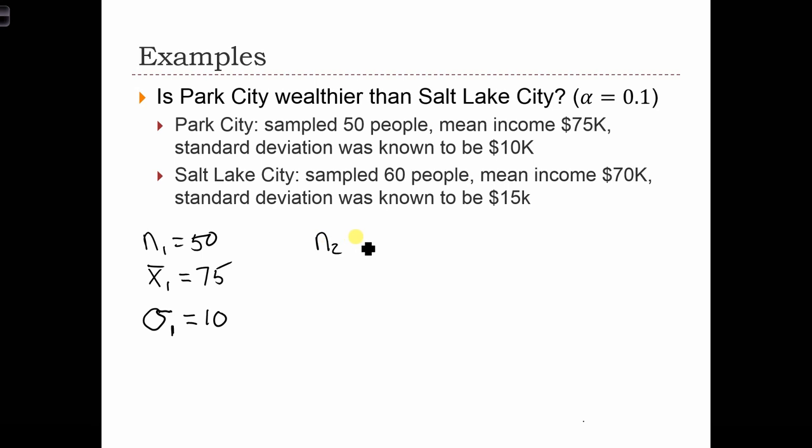In sample number two, they collected 60 people. There was a mean income there of $70,000 and a known population standard deviation of $15,000. I'll just add in all the Ks here so we don't leave them out later.